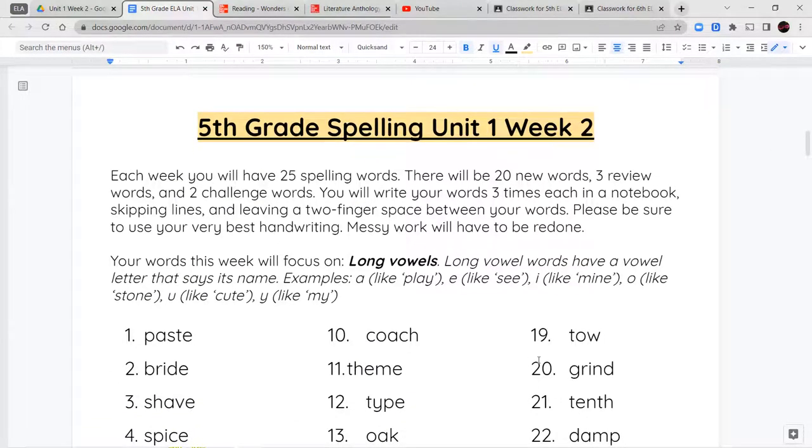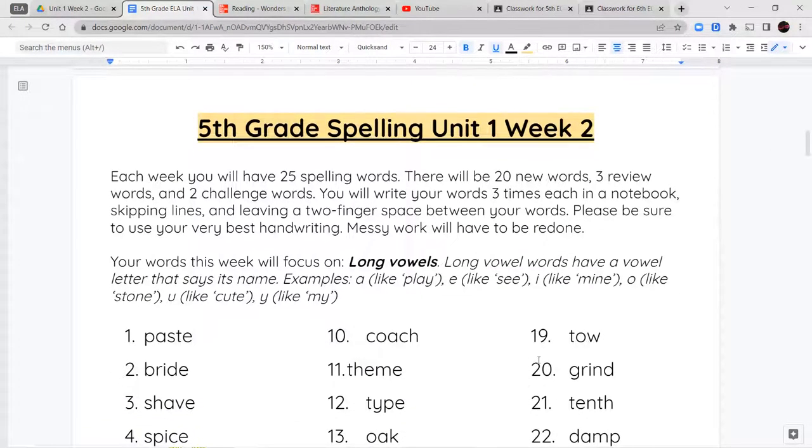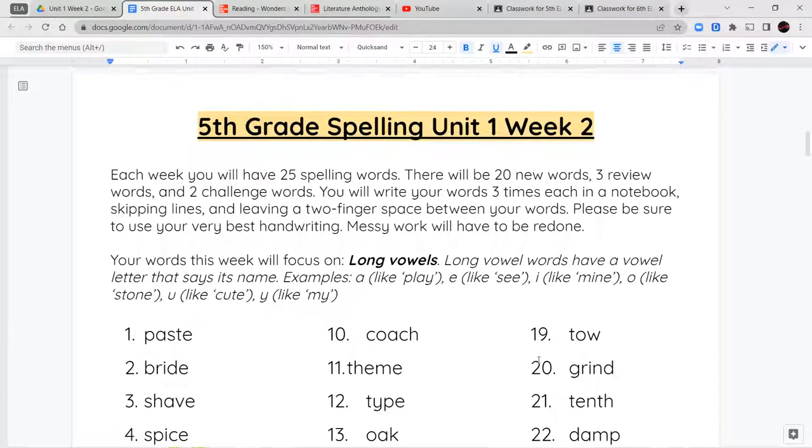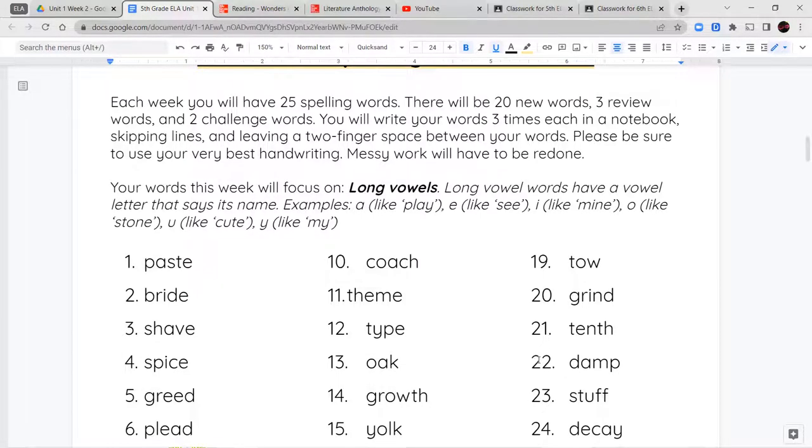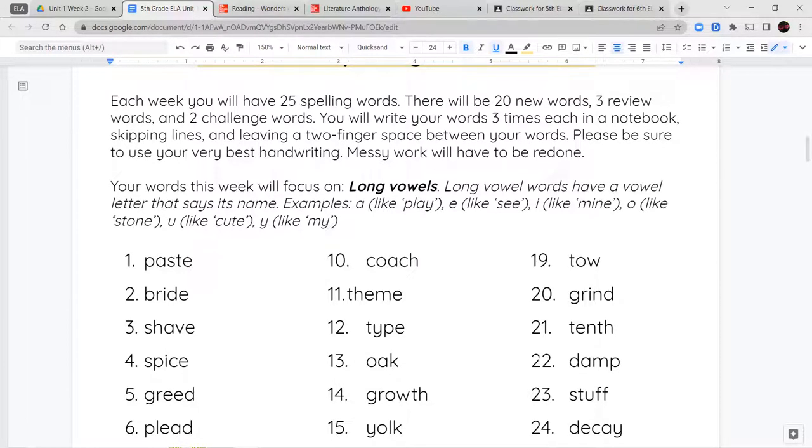Next, let's take a look at our spelling words for this week. This week's spelling words are focusing on long vowel sounds. Now, remember, a long vowel sound is when that vowel says its name. So A like play or E like C or I like mine. You're hearing A, E, I. O like stone or U like cute. Now the Y is making the I sound here.